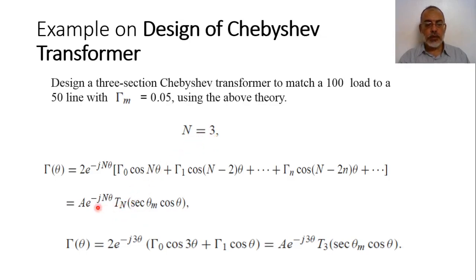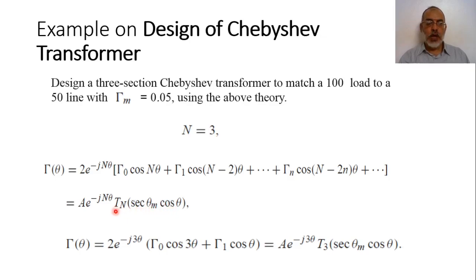This would be equated to the corresponding Chebyshev polynomial of order n. Here n is 3, so it would be A·e^{-j3θ}·T_3(sec(θ_max)·cos(θ)). The magnitude of A equals the maximum allowable reflection coefficient, so A equals 0.05.